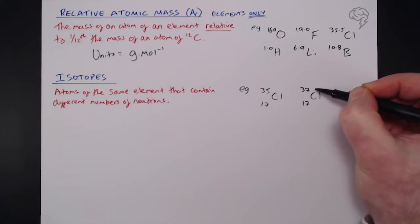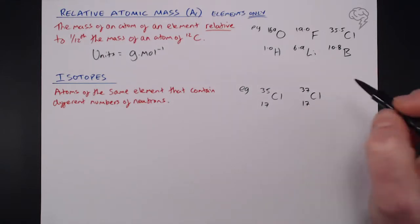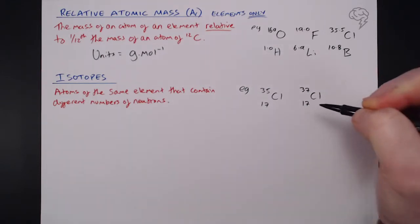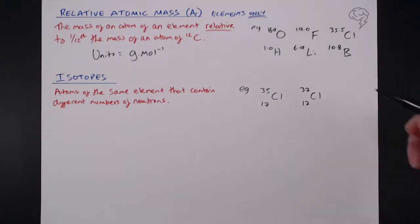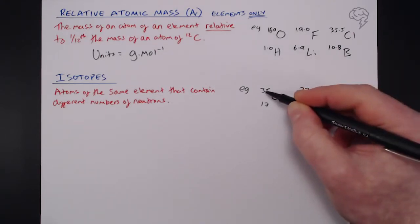You'll notice there are two more neutrons in chlorine-37 compared to chlorine-35. Other than that, they are identical. They have the same physical and chemical properties. The only difference between them is, of course, there are two more neutrons in this one than this one.